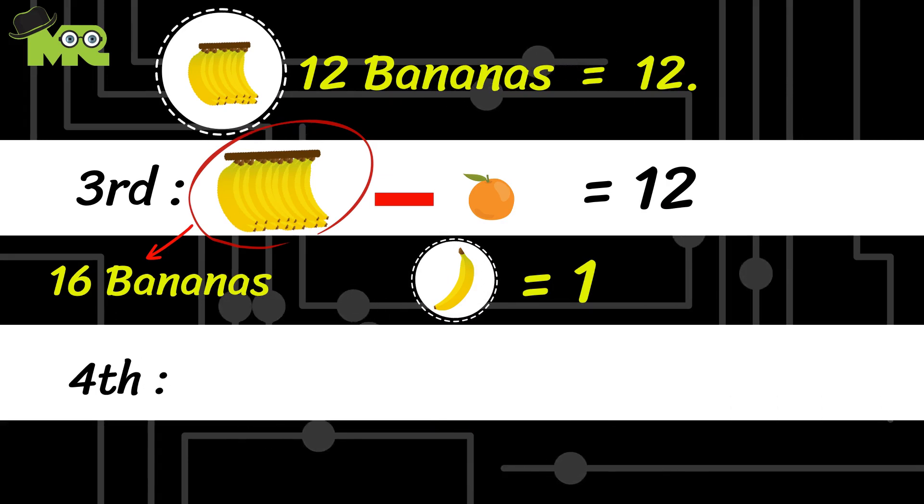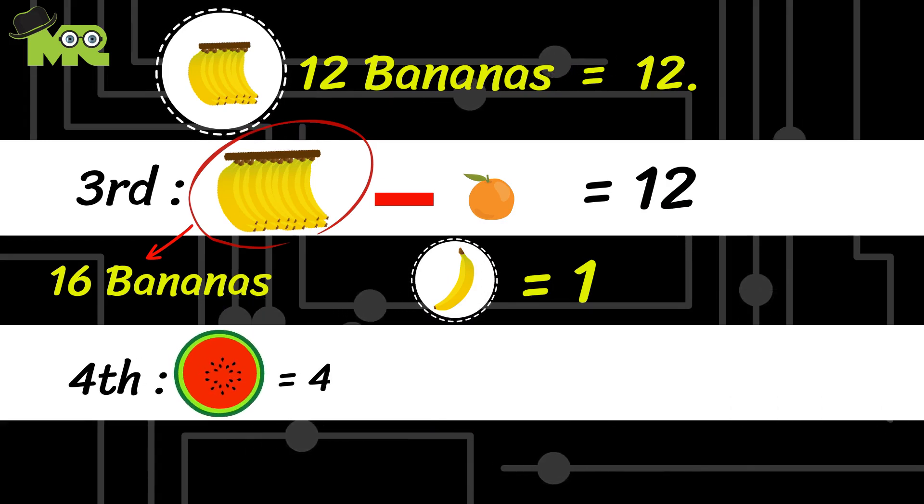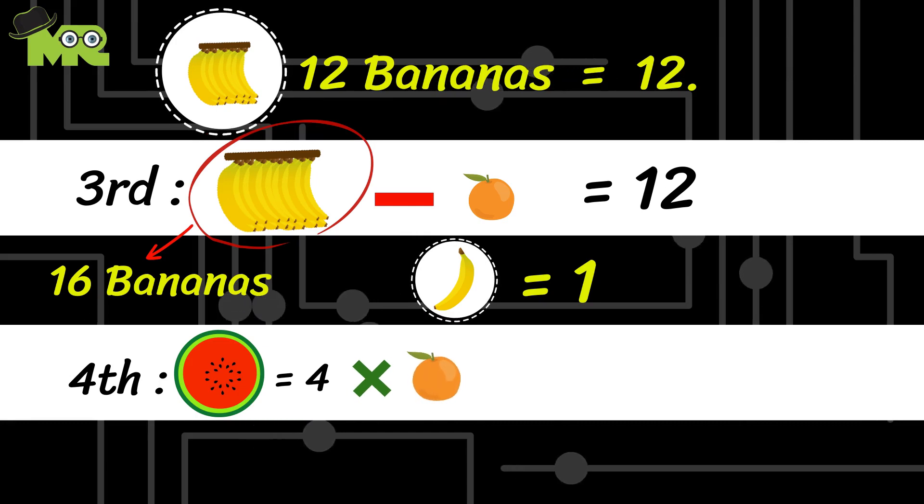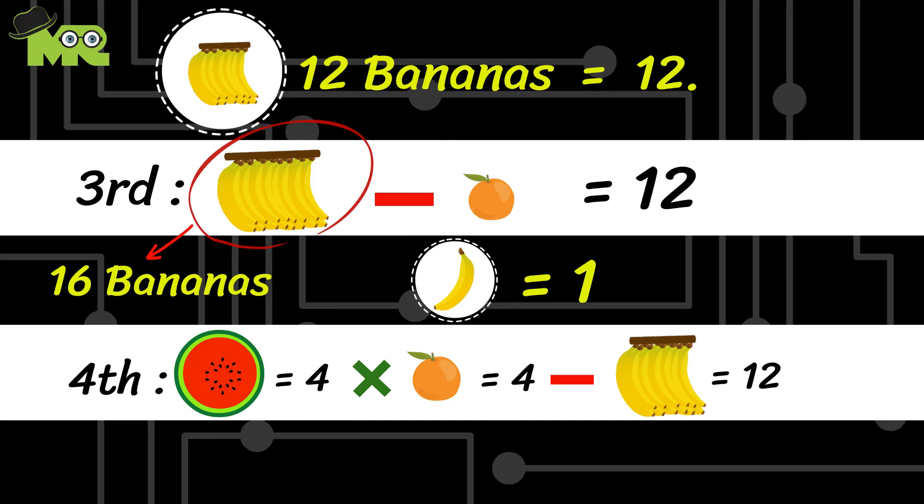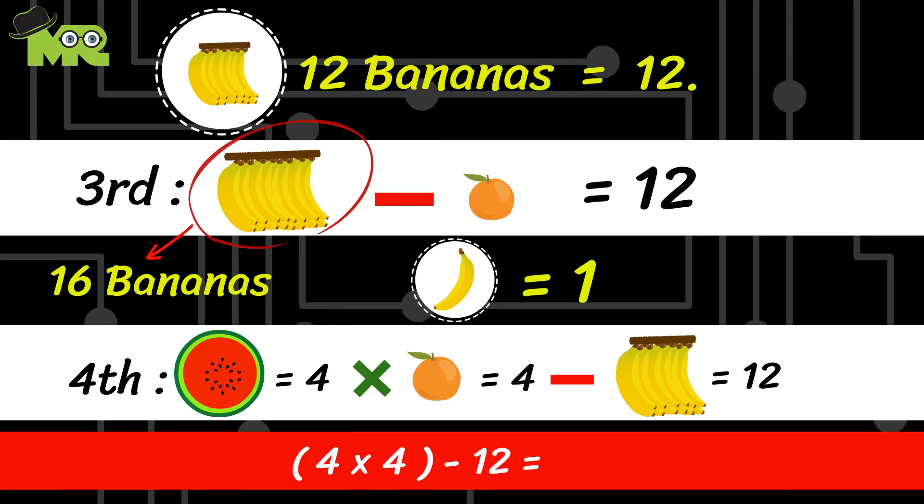Therefore, the equation is half a watermelon that equals 4 multiplied by an orange, which equals 4, subtracted by the 12 bananas. That equals 12. Therefore, the answer is 4.